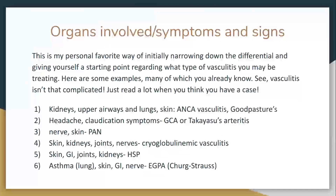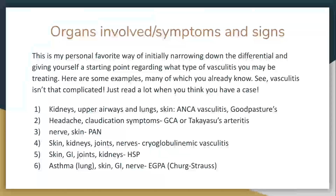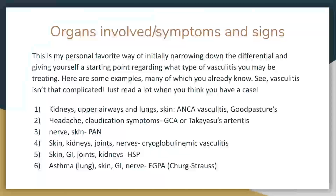For GCA specifically, you should learn all the findings — they can have jaw claudication, all this stuff you can see with ulcers. If you see nerve and skin involvement — think about that. Skin, kidneys, joints, and nerves — you've heard of cryoglobulin vasculitis. GI, joints, kidney — think IgA vasculitis, which is usually a kid's disease, although we had a patient recently who had it.